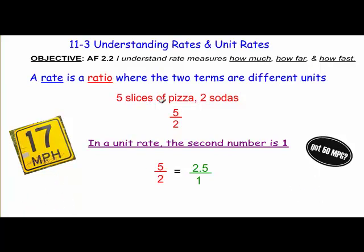Notice that the words rate and ratio have some commonalities. Rate and ratio start with the same three letters, giving you a clue that they might be related. And since we're writing them the same way, yes, they are related. A rate is a type of ratio, but the two terms are different units of measurement.